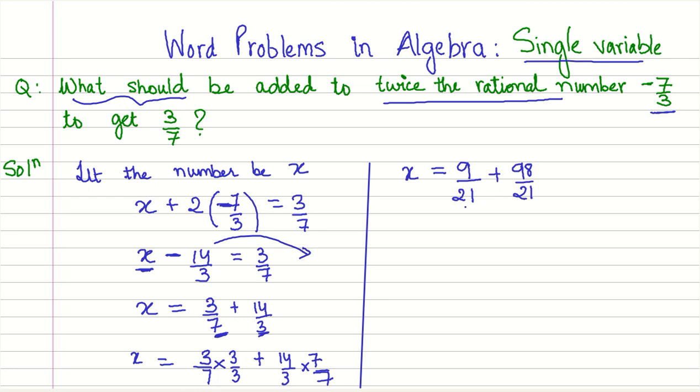And when we solve this, 9 plus 98 is 107 by 21. And this is therefore the answer, 107 by 21.